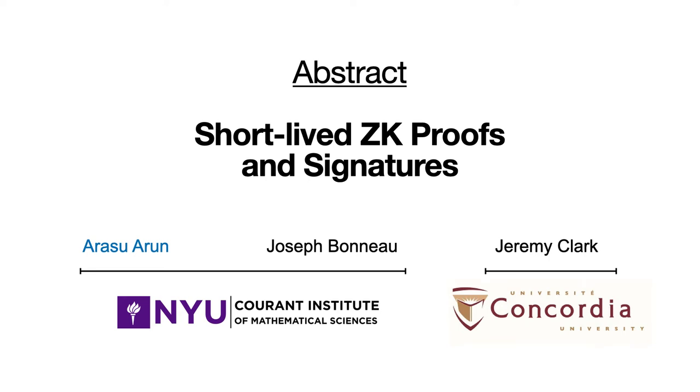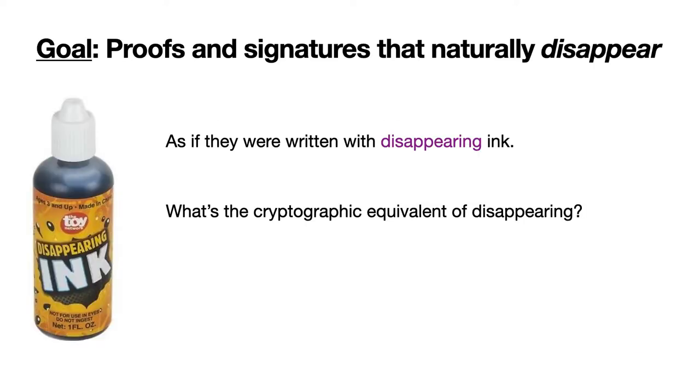In this work, we designed two new types of primitives called short-lived zero-knowledge proofs and short-lived signatures. Imagine you signed something on a piece of paper with disappearing ink. Whatever you signed would vanish after some time. What's the cryptographic equivalent of this?